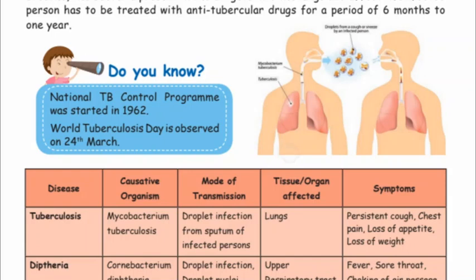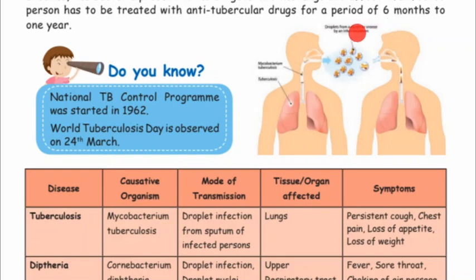Here we can see a diagram showing an affected person with TB. Droplets from the cough or sneeze of an infected person carry Mycobacterium tuberculosis, which is then inhaled by a healthy person, spreading the bacteria.